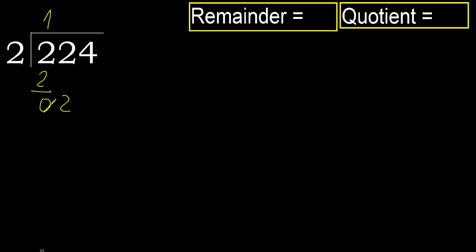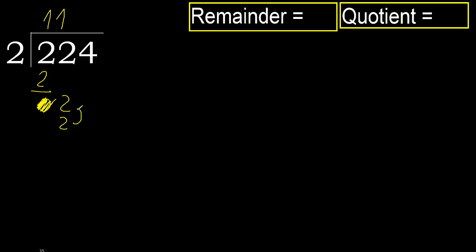Eliminate 0 on this side. 2. 2 multiplied by 1 is 2, it is not greater. Subtract, next.